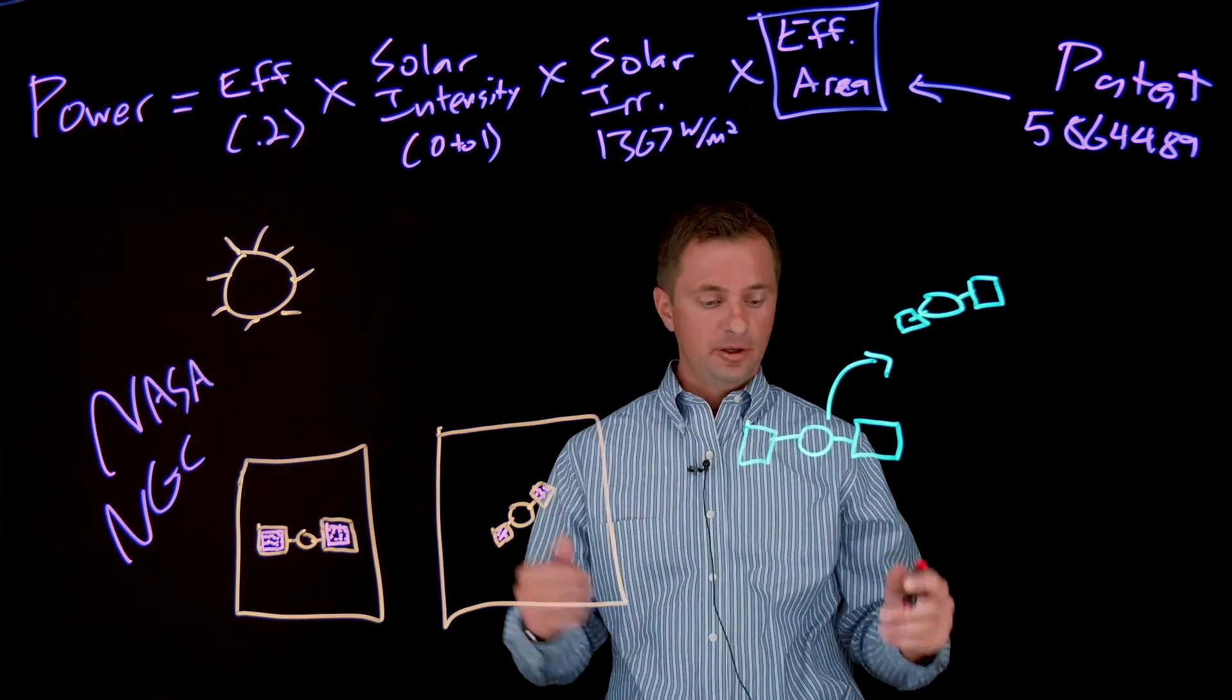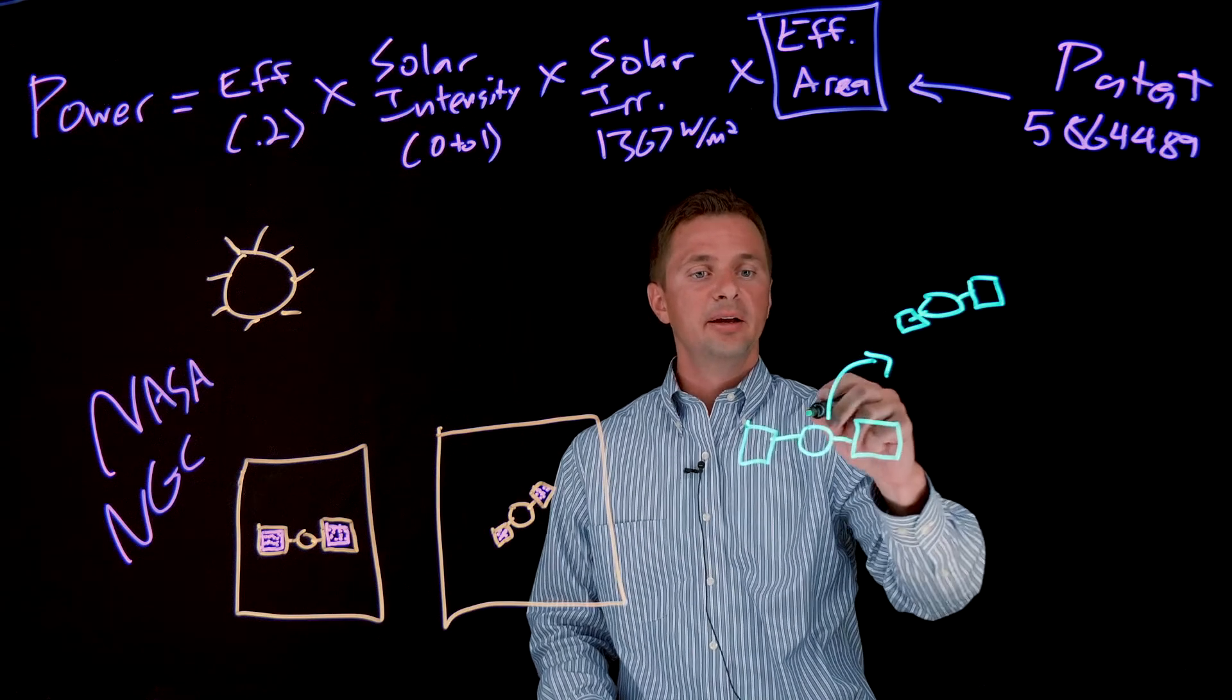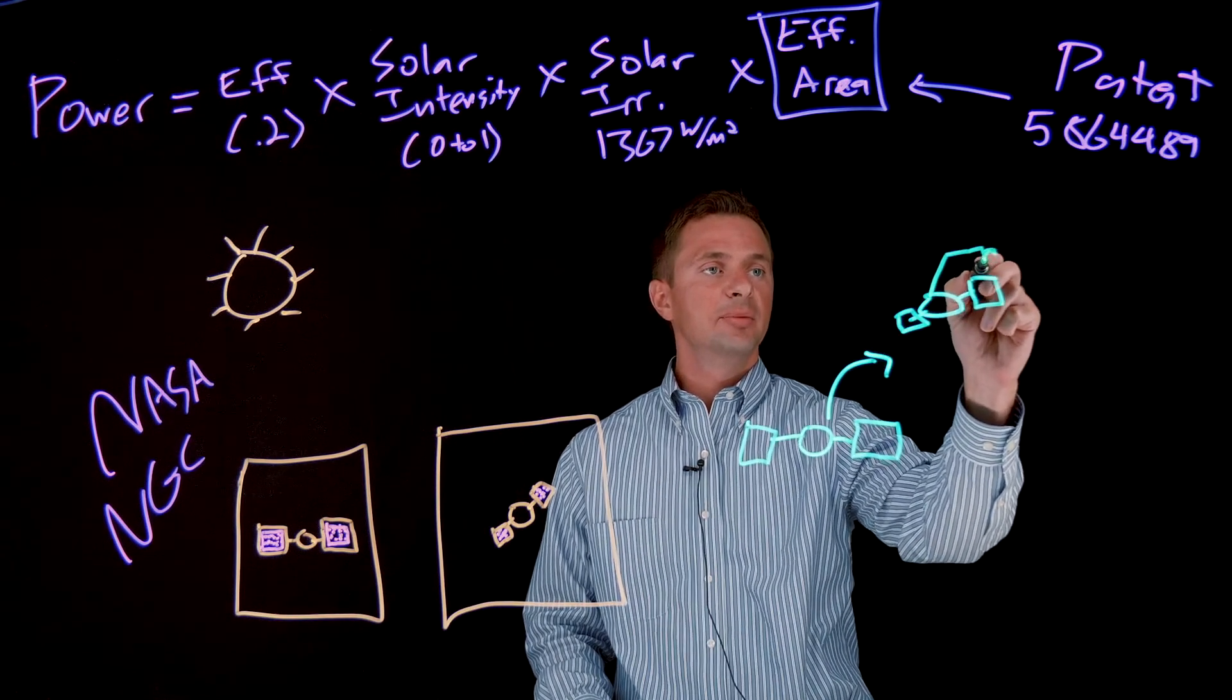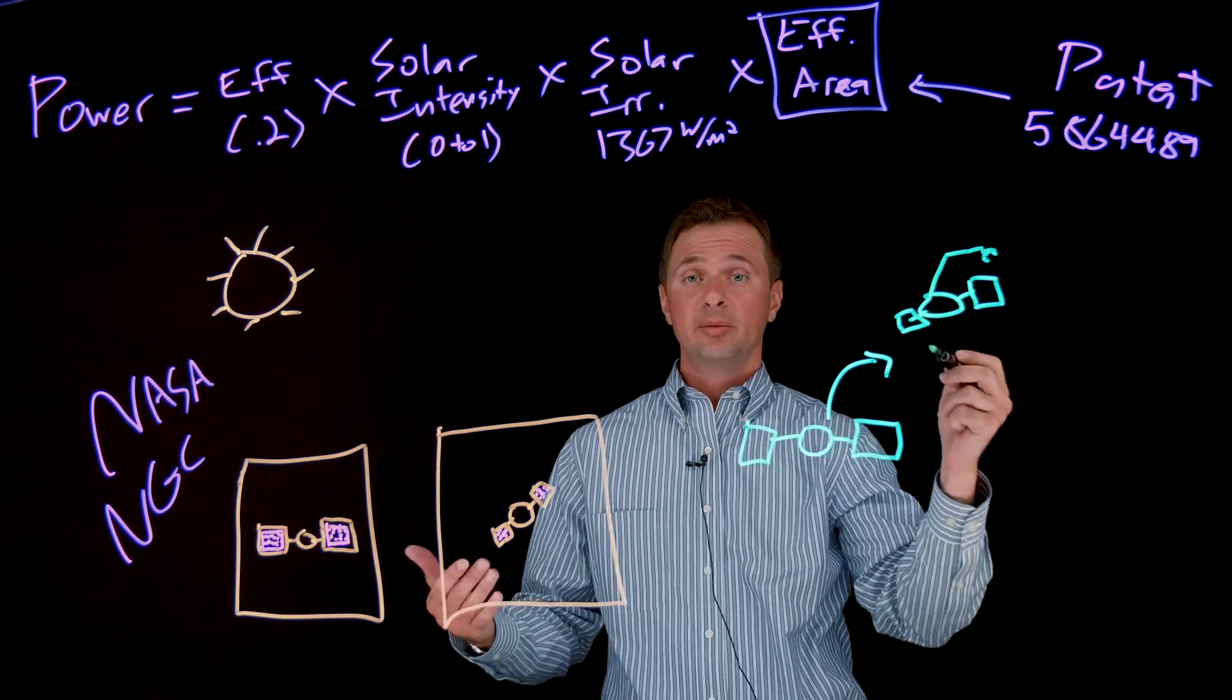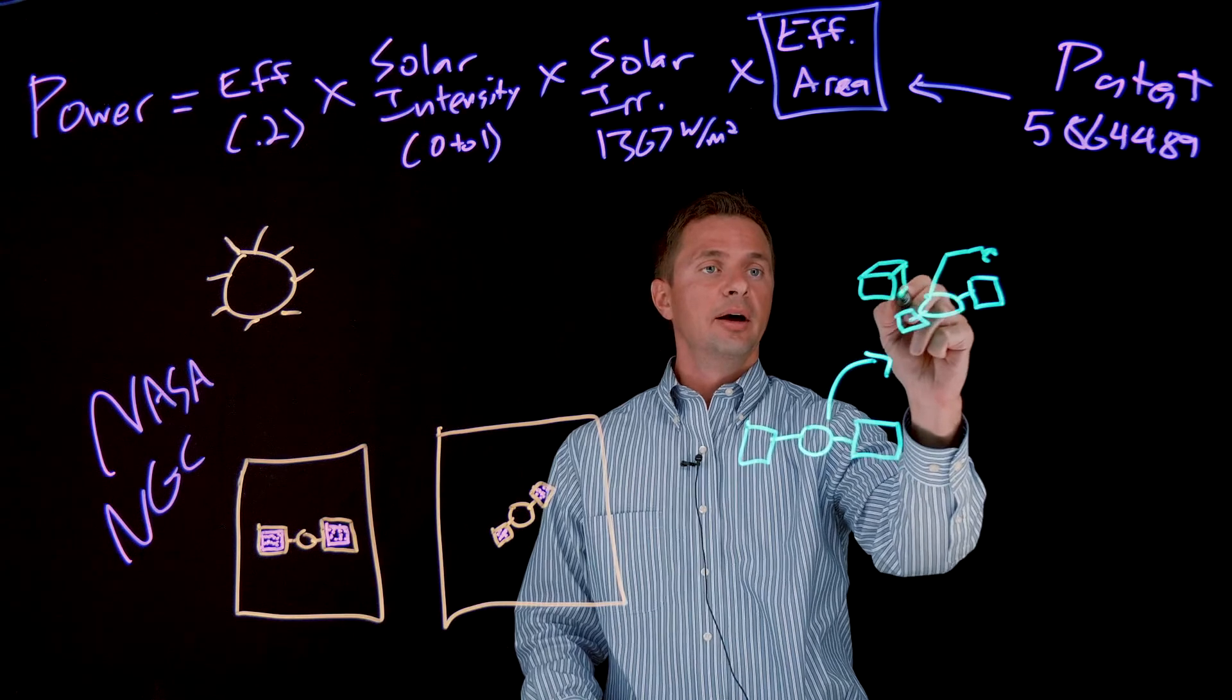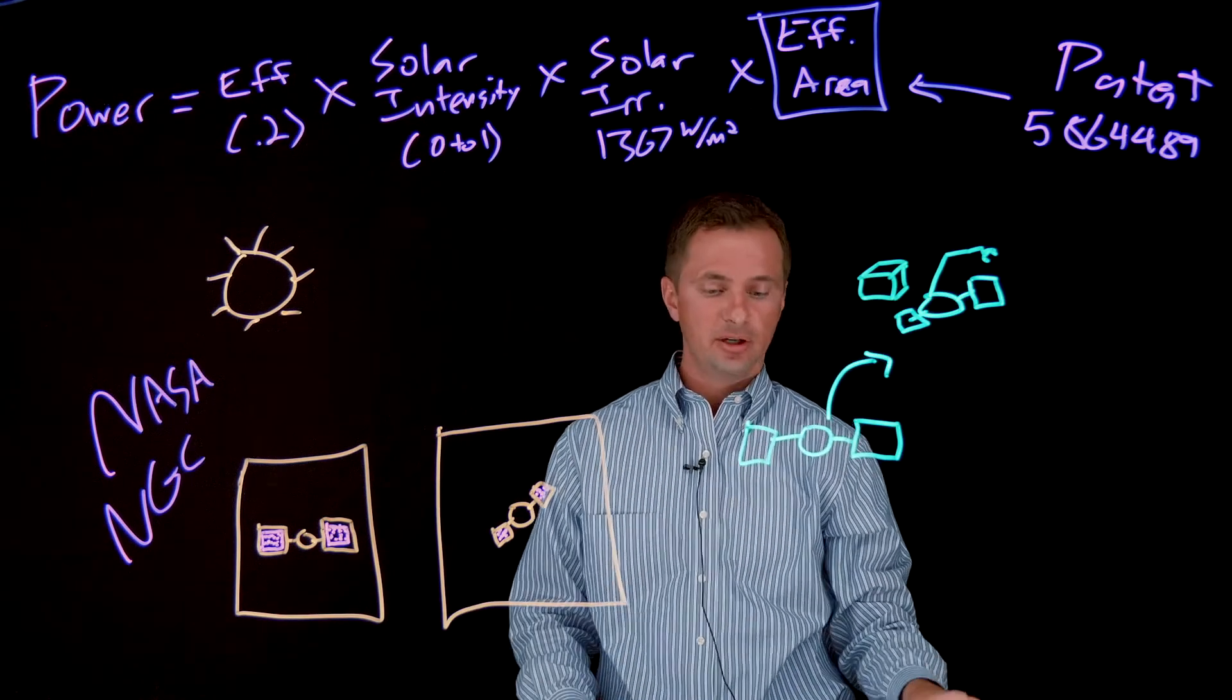And so as you can imagine, if you've got this spacecraft, now all of a sudden, it's more complex. Maybe you've got some kind of arm on it, some kind of robotic arm or something like that, or you're doing proximity operations to another spacecraft, maybe there's a CubeSat over here. How much of that is impacting my solar power generation.